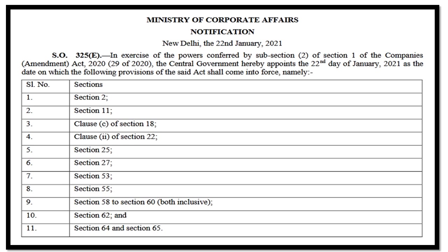On 22nd January there were two notifications — one regarding section 21 of Companies Amendment Act 2019, and the other regarding sections of Companies Amendment Act 2020. Some sections of Companies Amendment Act 2020 were already notified earlier; a separate video covers those. Now we will look at what additional sections have been notified from Companies Amendment Act 2020.